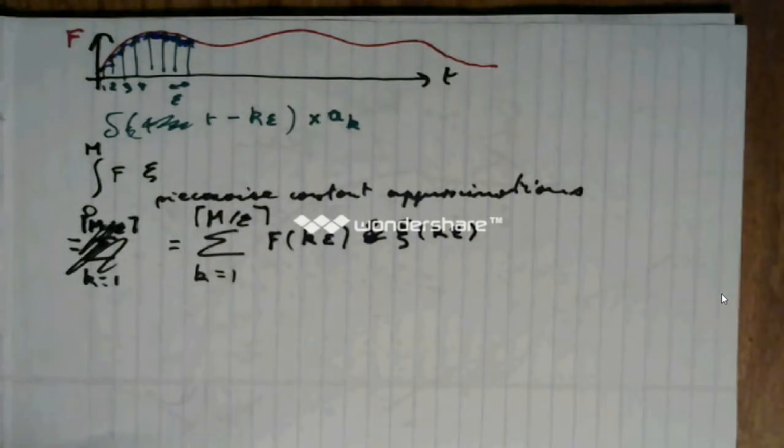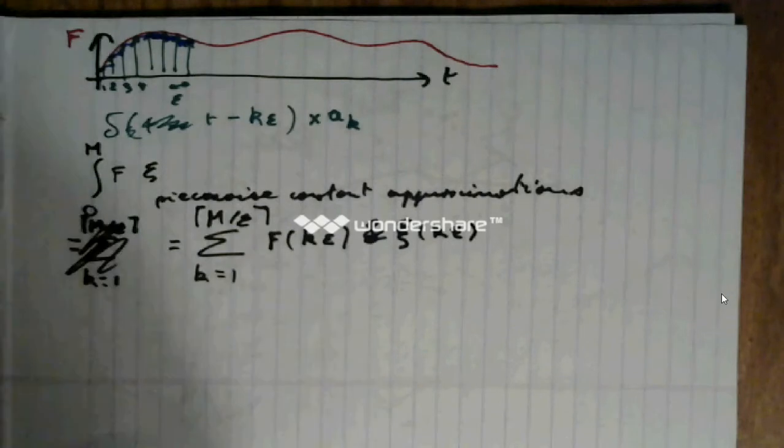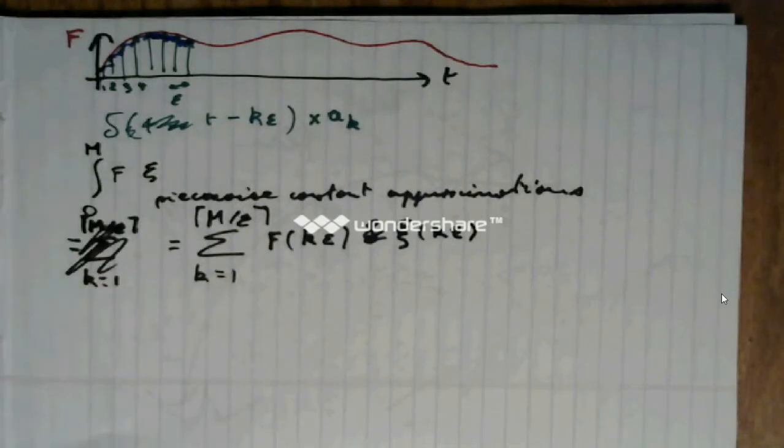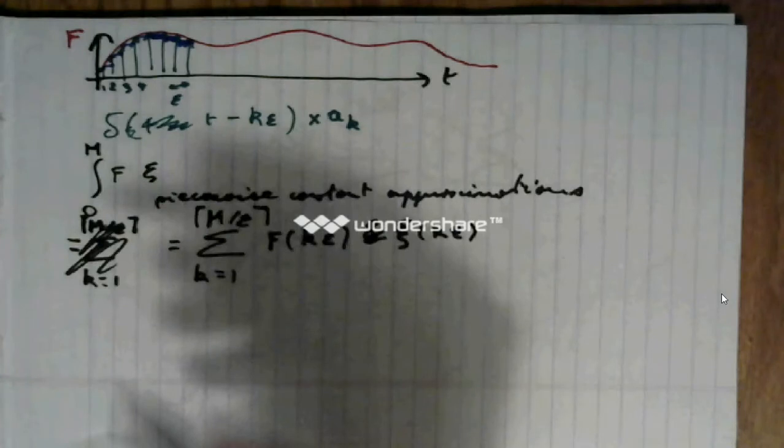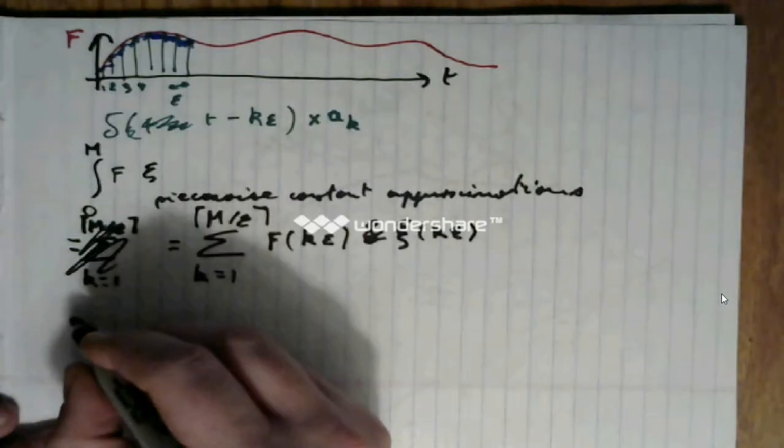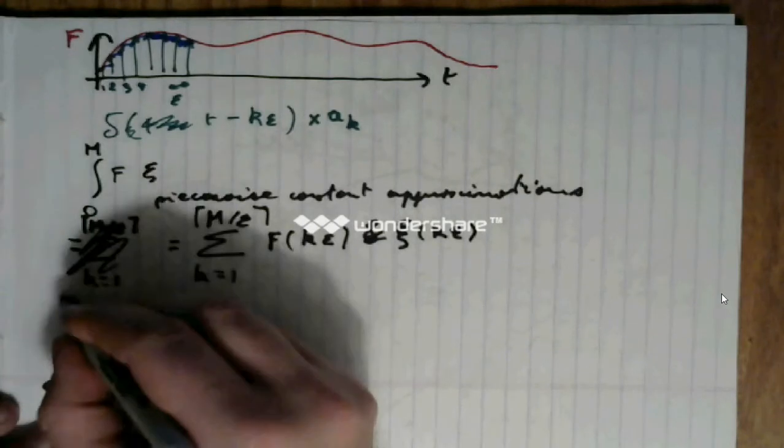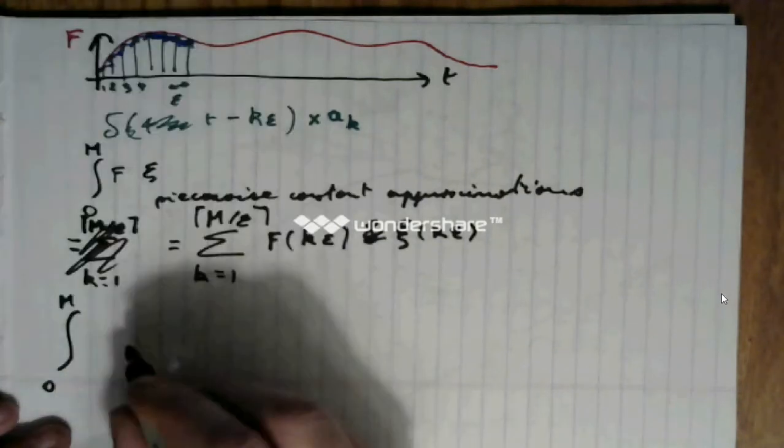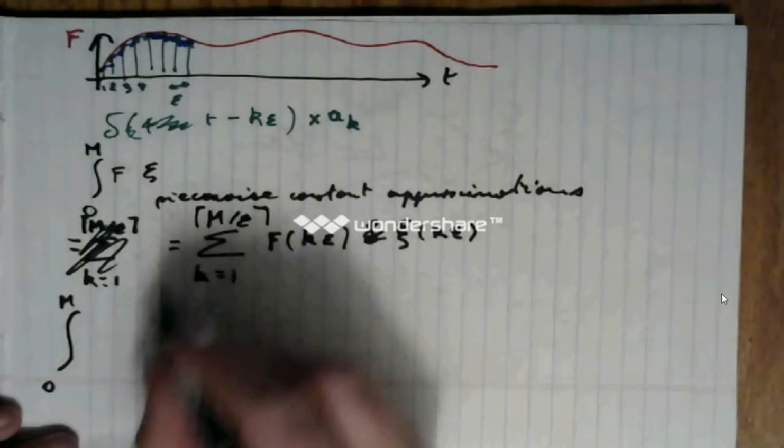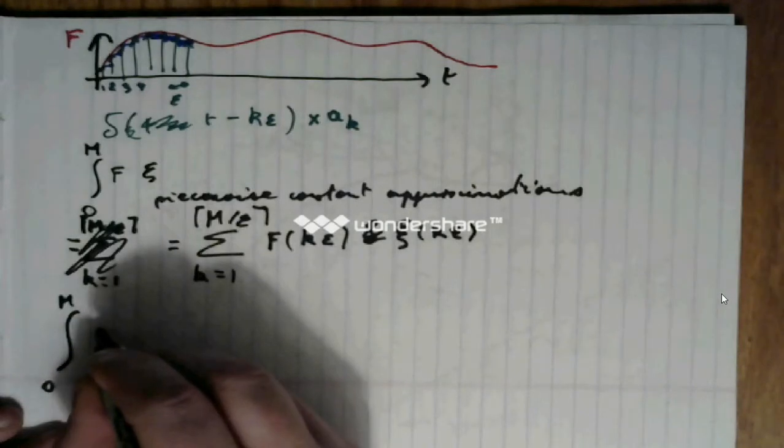Now, suppose that instead, we're to compute the same integral, but it would be the integral of the sum of these little guys here, these little spikes, these little deltas.